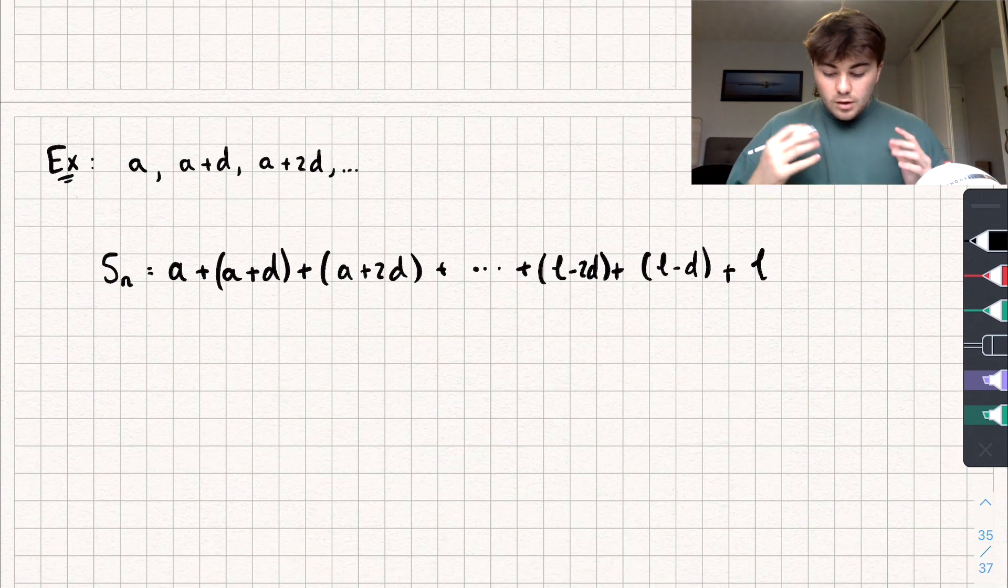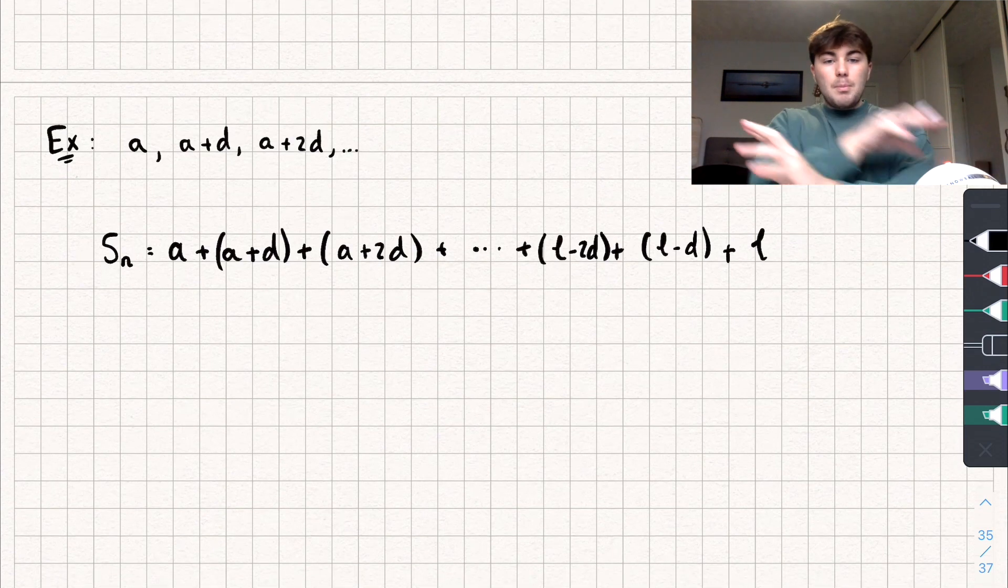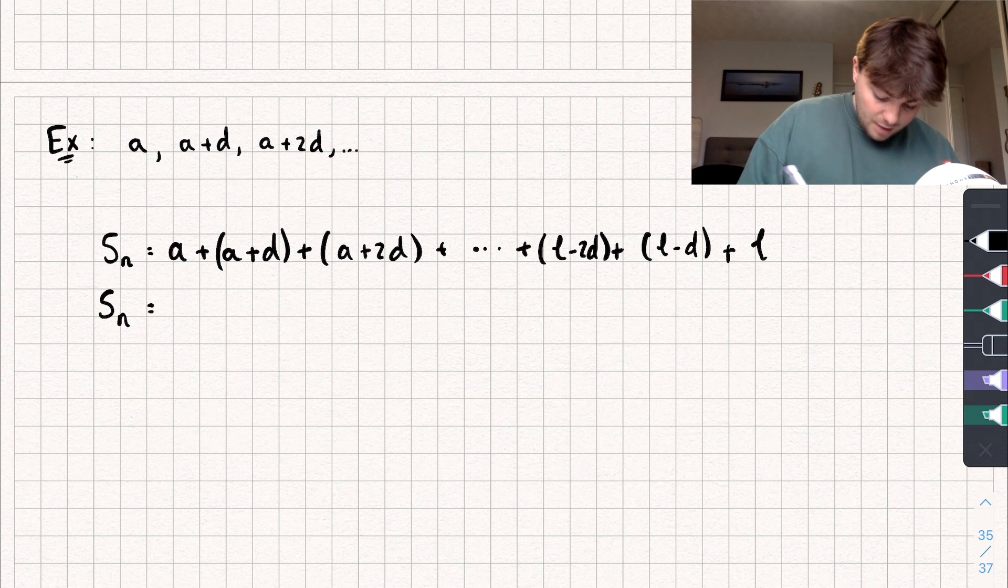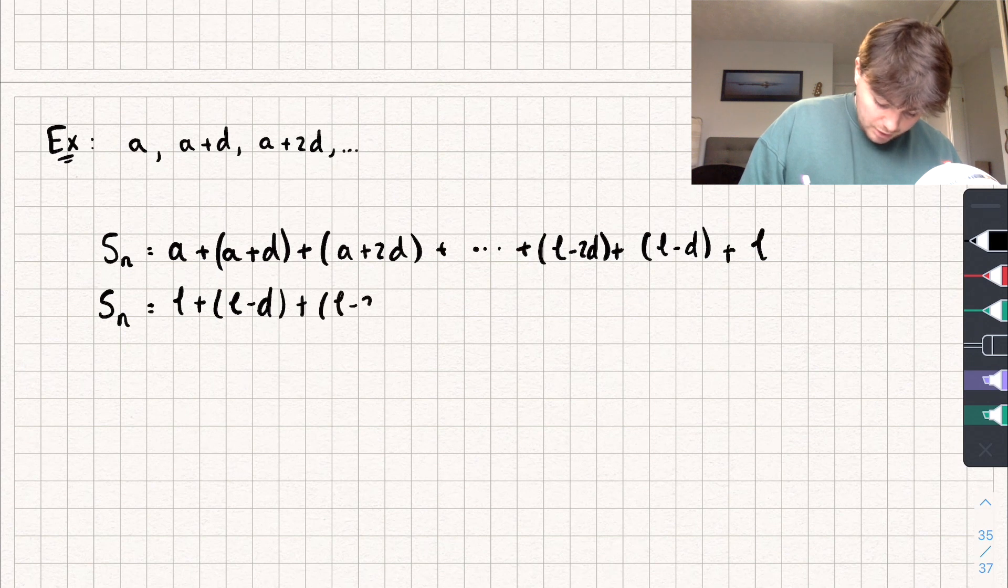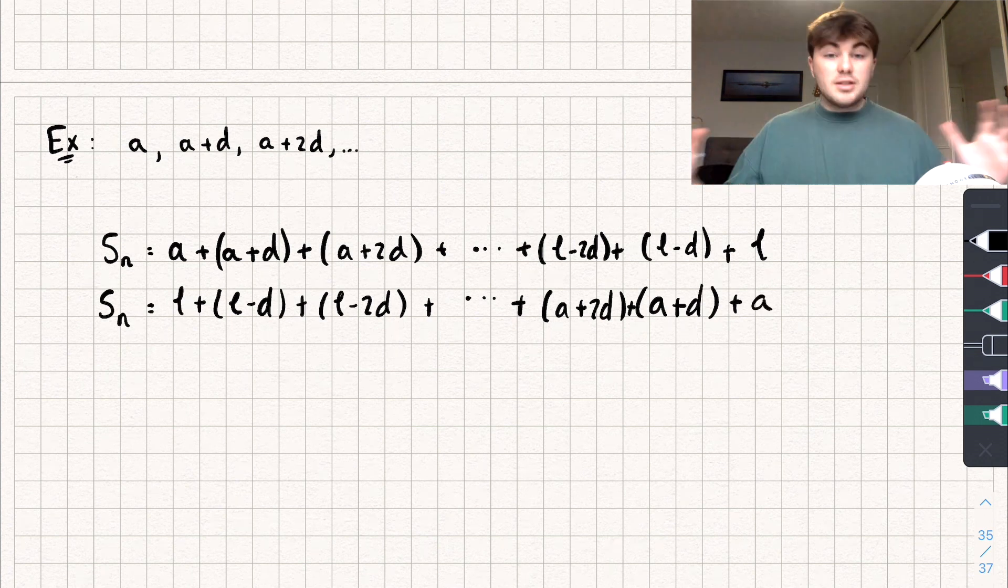So this would tell me the sum of the first N numbers in a generic arithmetic progression. All I'm going to do now is I'm going to flip it around. I'm going to rewrite it, so S_N, and I'm going to write it like this, L plus L minus D plus L minus 2D, plus, plus, plus, we've flipped it. So then we'll have A plus 2D plus A plus D plus A. So you can see I've flipped it around.